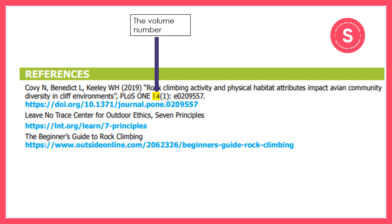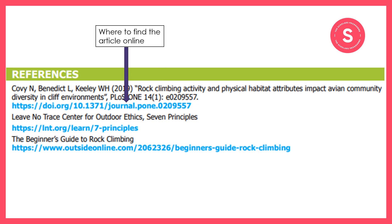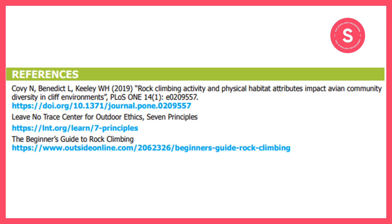Next we've got the volume number — I'll come back and explain what this means in a moment — and then the issue number, which I'll also come back to. In blue we've got the link for where you can find the article online. So what do we know so far? The authors of the article on rock climbers and birds read an article written by Covey, Benedict and Keeley, published in 2019, with a known title, published in the journal PLOS ONE.